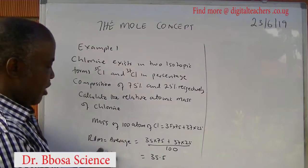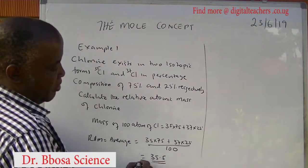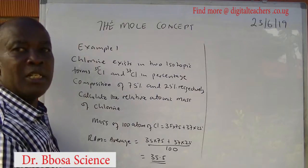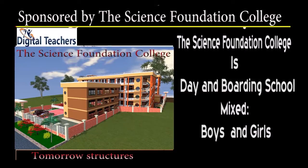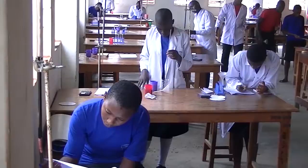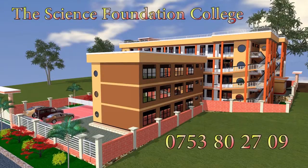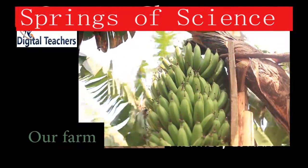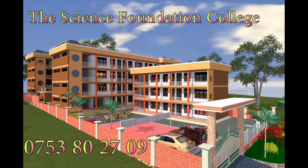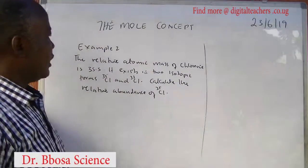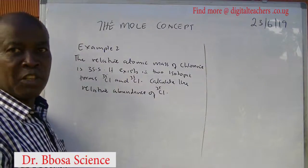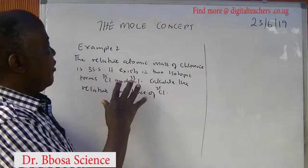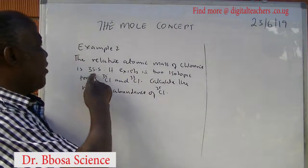So the relative atomic mass of chlorine will be equal to 35.5.